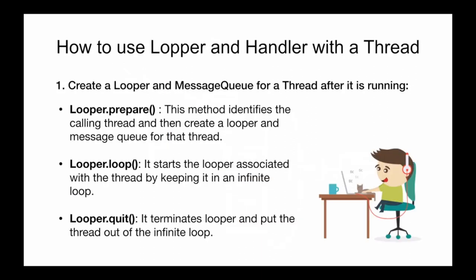Now let's see how to use looper and handler with a thread in actual code. First, we need to create a looper and message queue for a thread, which can only be done after the thread is running. There are three static methods in looper: looper.prepare() uniquely identifies the thread and creates a looper and message queue for it. looper.loop() starts the infinite loop associated with the thread, keeping it running. looper.quit() terminates the looper and puts the thread out of the infinite loop.